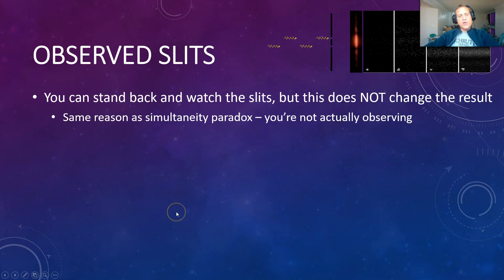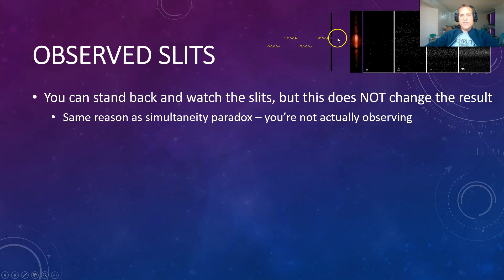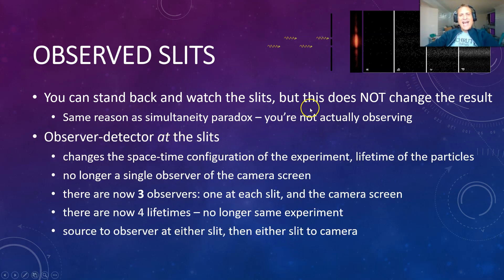So: observed slits. They always bring up — if you observe the slits, the interference doesn't happen. But you can stand back and observe the slits — you can do this experiment with photons while you're staring at the slits and you still get the interference pattern. So it's not just staring at the slits that eliminates the pattern. Observing the slits changes the results in a very particular way. You're not actually observing the photons going through the slits — you're just observing photons which bounce off the experiment and come to you. The ones that make it through the slits — you're not observing those. If you have an observer detector at the slits, here's the thing: you are changing the space-time configuration of the experiment, and you're changing the lifetime of the particles.